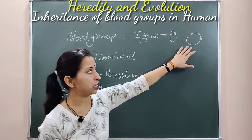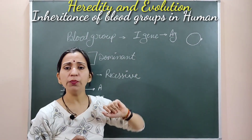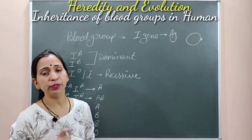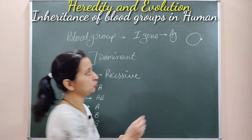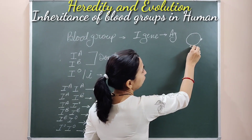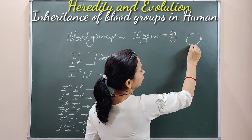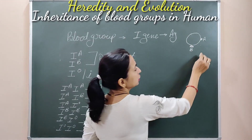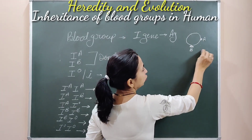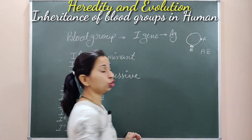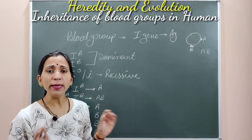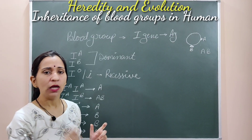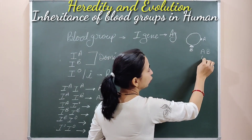If antigen A is present, the blood group will be A. If antigen B is present, the blood group will be B. If both antigen A and antigen B are present on the surface of the plasma membrane, the blood group will be AB. And if no antigens are found on the surface of RBCs, the blood group will be O.